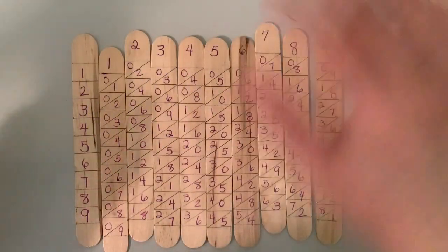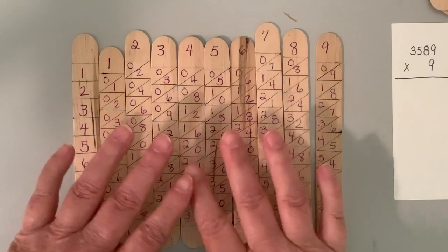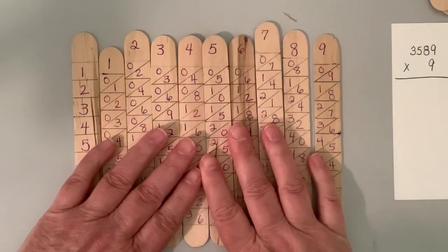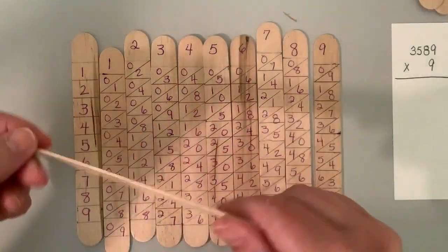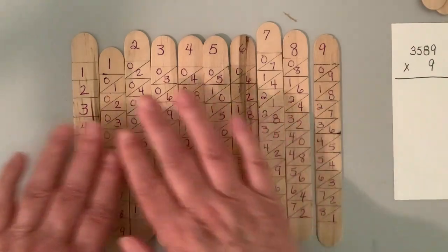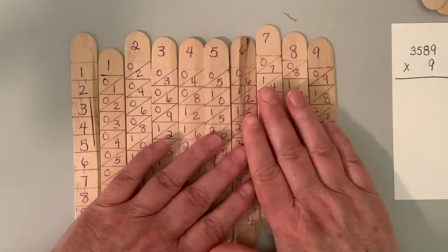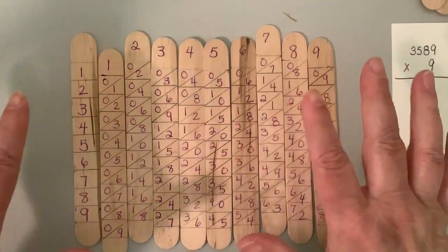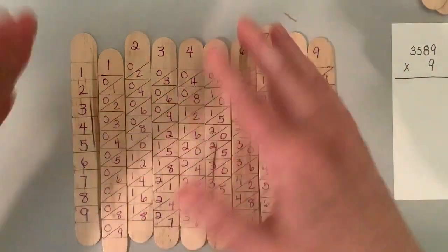What I've done is I've made a more sturdy set of Napier's rods using tongue depressors. So I just got tongue depressors. I lined them up. I actually put tape on the back of them to hold them still. And then I drew the numbers on here.